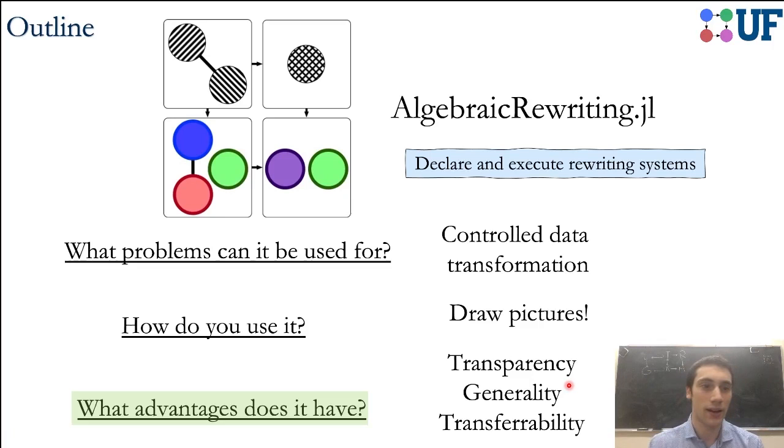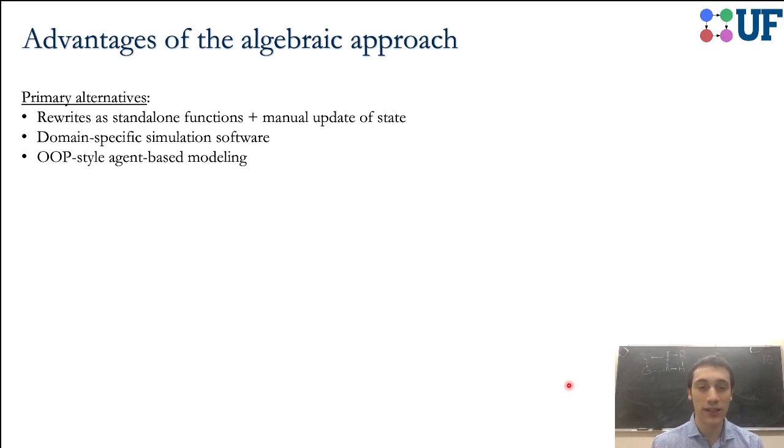Lastly I want to talk about advantages that this approach has, and that begins with saying what the alternatives are. To my understanding, you could do this without using a declarative interface at all. But then you have a lot of issues of interpretability, transparency, that it's not clear when something goes wrong why it went wrong. There are domain-specific simulation softwares that might not be super general, but they're really fit for purpose for a particular data structure that you're interested in.